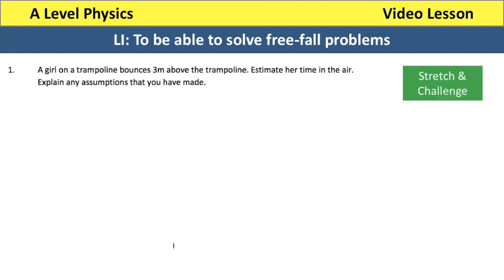Now let's have a go at some stretch and challenge questions. A girl on a trampoline bounces 3 metres above the trampoline. Estimate her time in the air and explain any assumptions you have made. We imagine two stages to the motion: the girl moves upwards for part of the time in the air, then downwards for the remaining time. Because the acceleration changes direction — negative when moving upwards, positive when moving downwards — we cannot use SUVAT for the entire motion.